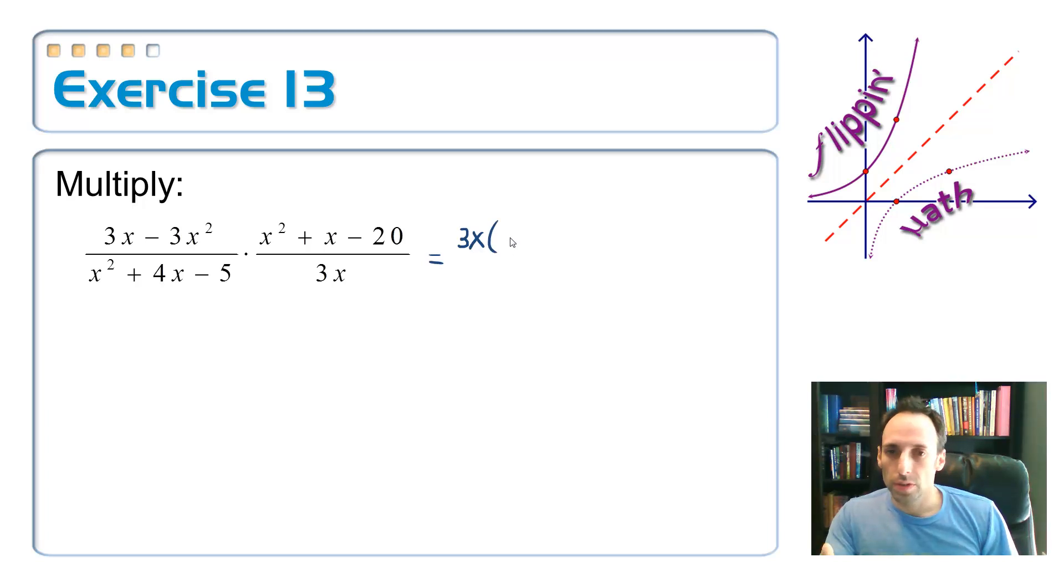In the bottom of that fraction, open up my two set of parentheses, x and x, and this has multiply up to 5, so a 5 and a 1, and positive 5, negative 1. There we go.